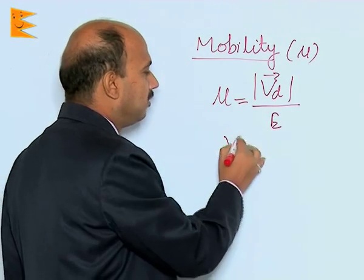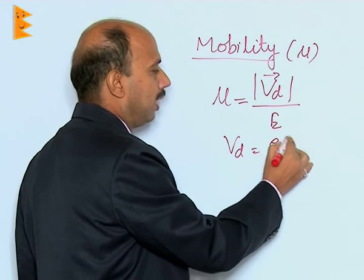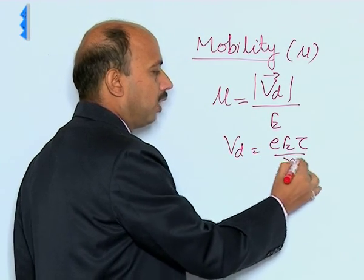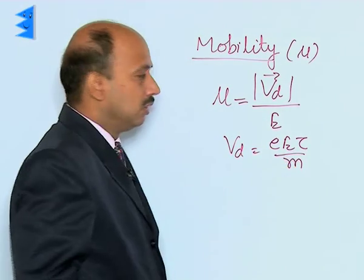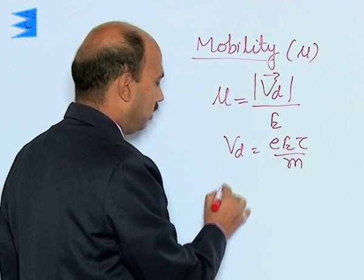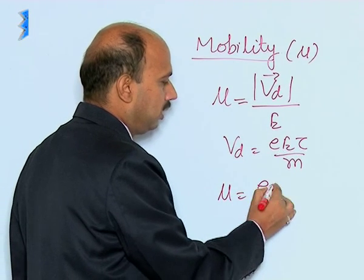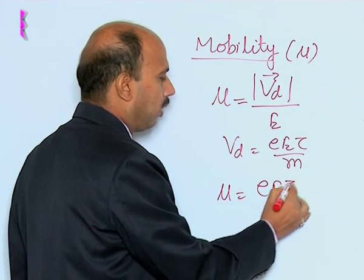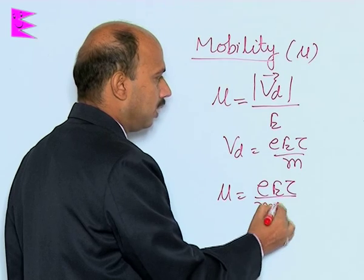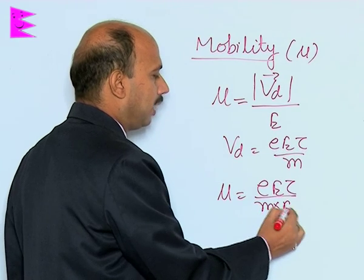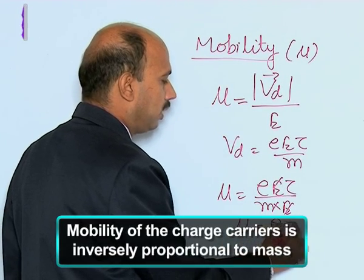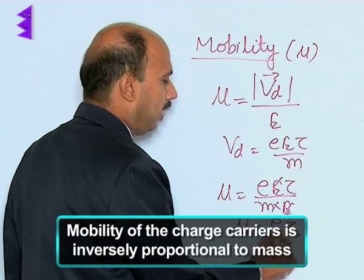We know V_d is equal to eEτ/m, which we have already derived. So substituting, mu is equal to eEτ/m divided by E — the E cancels here — so mu is equal to eτ/m.